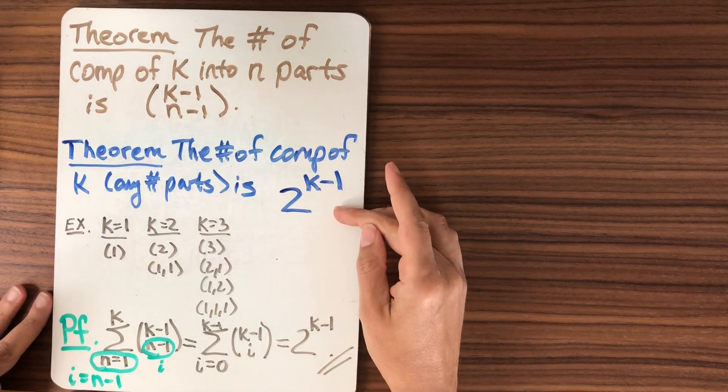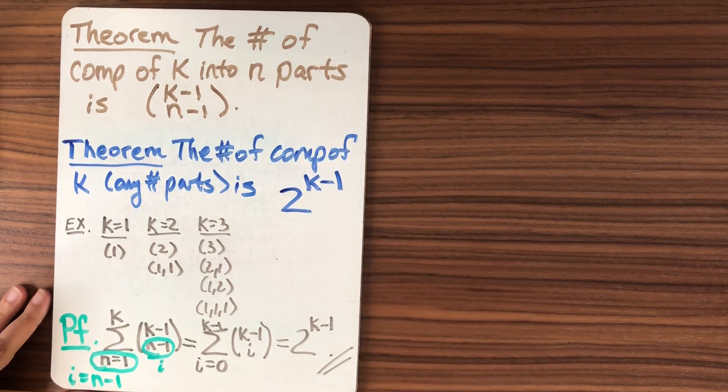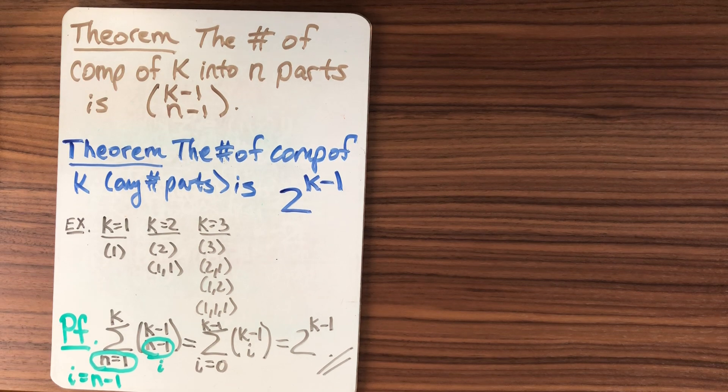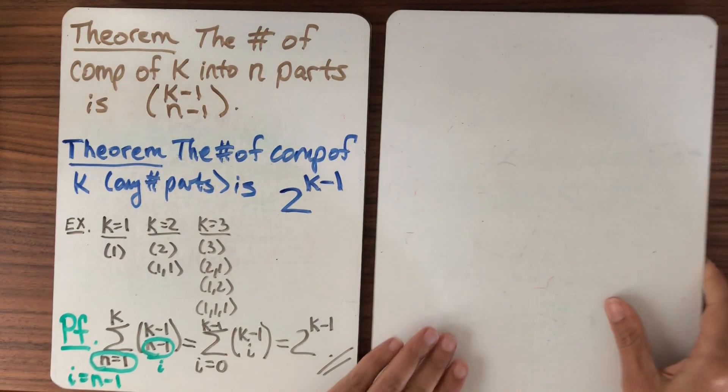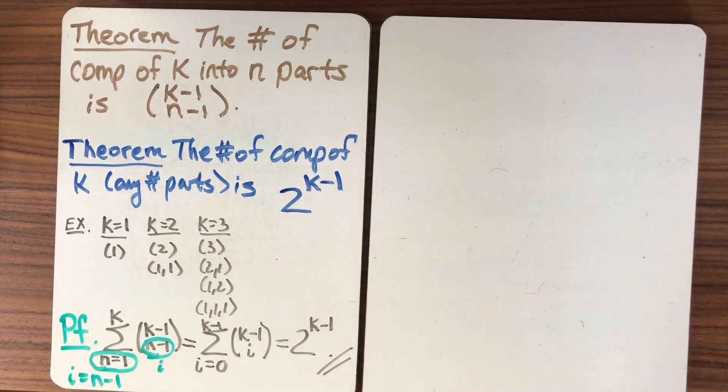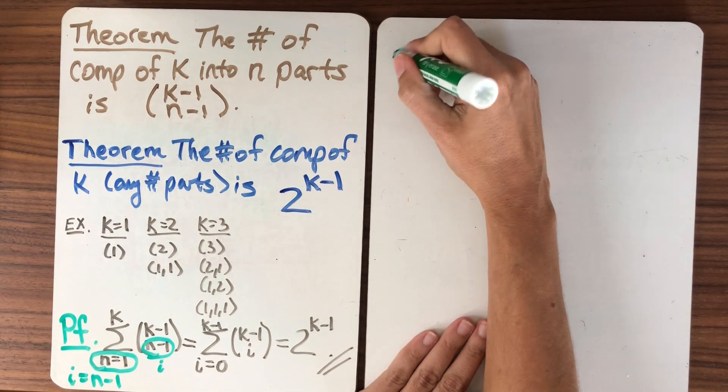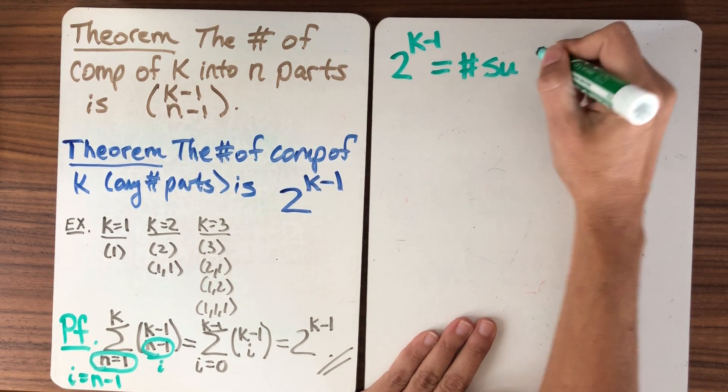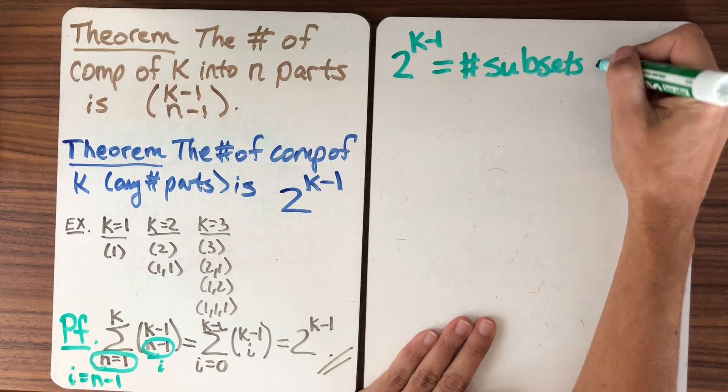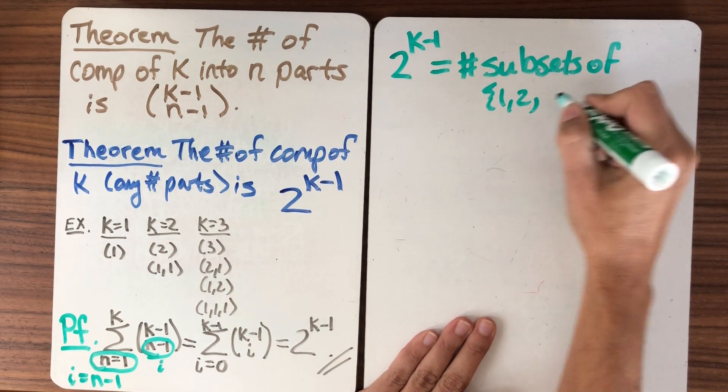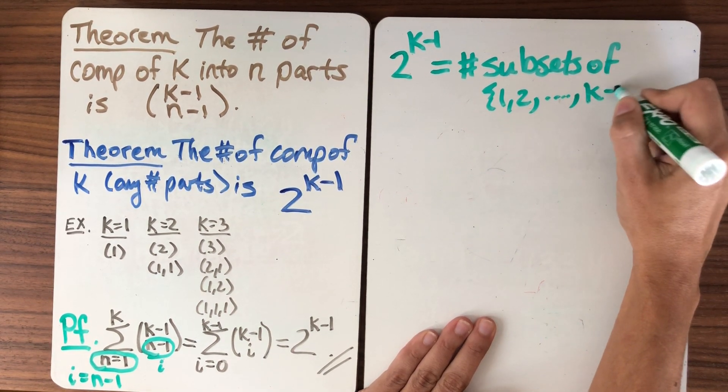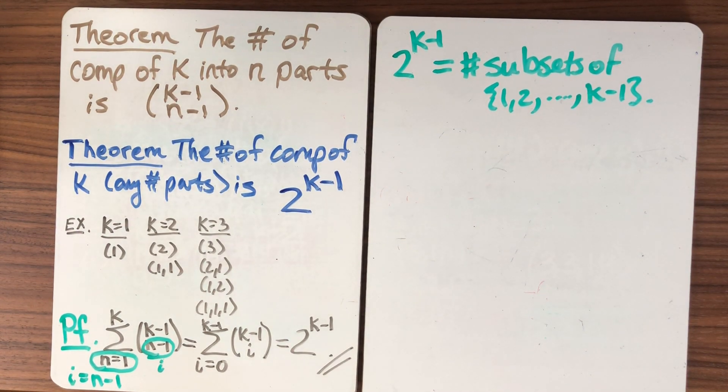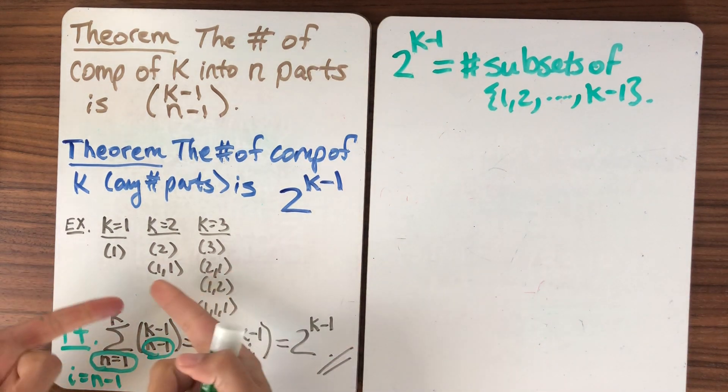But when we have something that's counted by such a nice formula, it's often a good idea to ask yourself, how can I relate that to something else that I know that's counted by the same nice formula? Well, what else does two to the k count? Well, two to the k minus one also equals the number of subsets of the numbers one, two, all the way up to k minus one. So I can ask myself, is there a way that I can relate that, relate this combinatorial description to these objects?